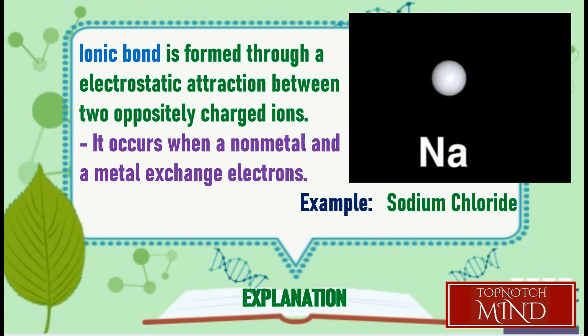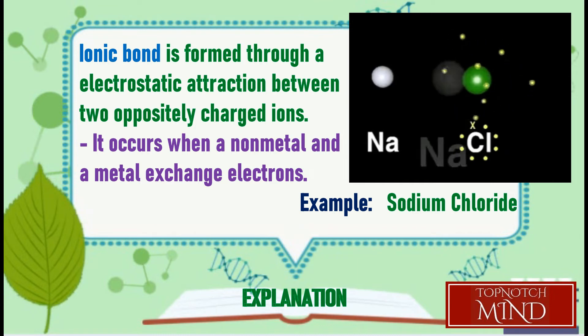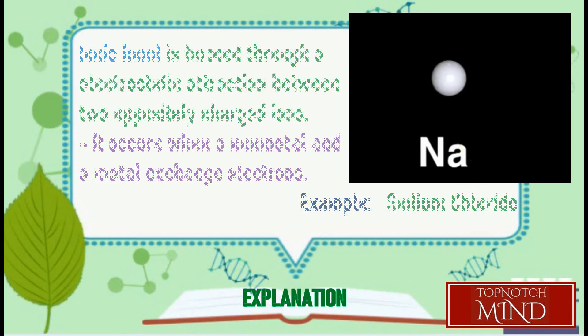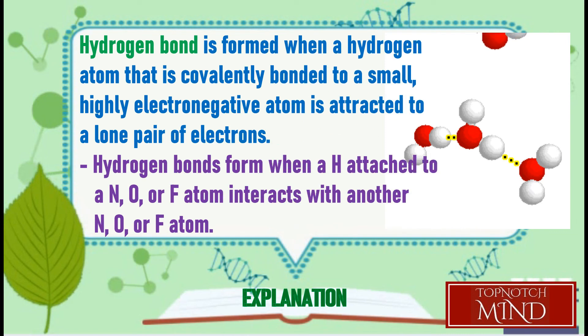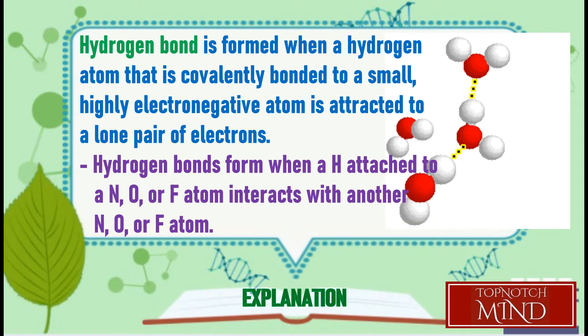Meanwhile, an ionic bond is a type of chemical bond formed through an electrostatic attraction between two oppositely charged ions. It occurs when a nonmetal and a metal exchange electrons. On the other hand, a hydrogen bond is formed when a hydrogen atom that is covalently bonded to a small, highly electronegative atom is attracted to a lone pair of electrons on an atom in a neighboring molecule.